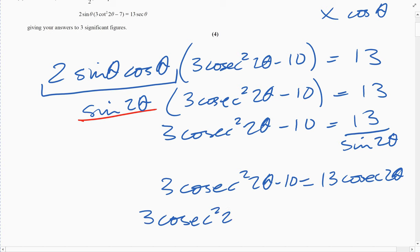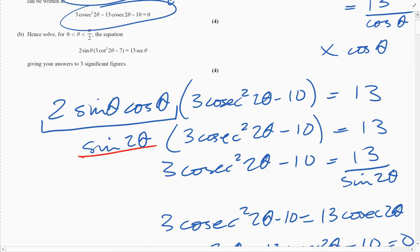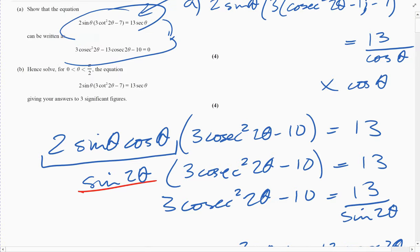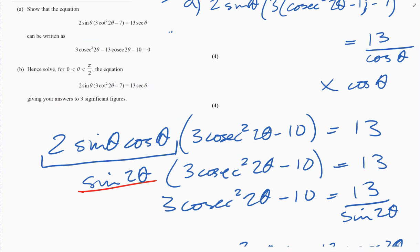Part b: if you compare the two equations we're solving in part b, this is exactly the same as this, which is exactly the same as this. So there's nothing funny going on here. We don't need to let 2 theta equal 2 theta or anything like that. All we need to do is solve this.